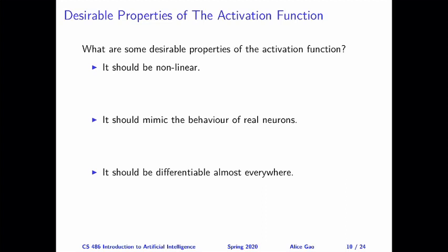Once we use a nonlinear activation function, a neural network with multiple layers of neurons is essentially interleaving linear and nonlinear functions — computing weighted sums as the linear part, then feeding these into a nonlinear activation function, and repeating this across layers.